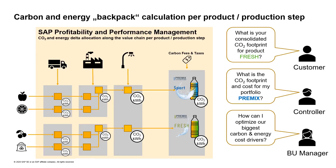Controllers get a new perspective on the profitability and costs of their product portfolios, including CO2 and energy costs. Business unit managers can use the detailed carbon and energy contributions per material, activity, and production step to optimize business processes from the cradle to the gate.